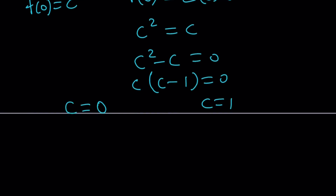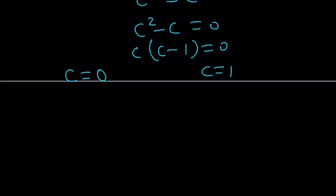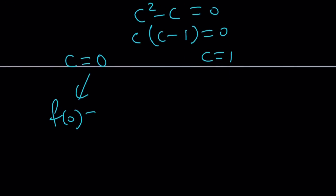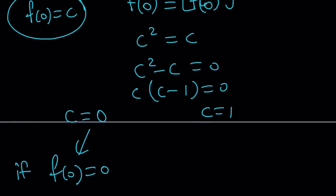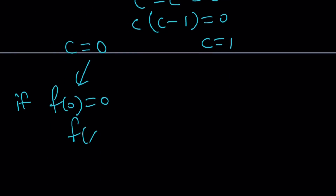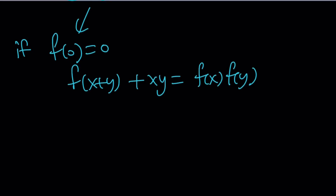But what is c? C is f of 0. So we have two options for f of 0, and we're going to look at each case. If c is 0, that implies f of 0 is 0. Let's use this: if f of 0 is equal to 0, I want to write the original equation one more time — f of x plus y plus xy equals f of x times f of y — and we do know that f of 0 is equal to 0.